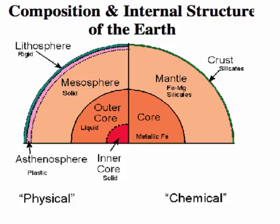So I want to look at the two different types of layers. The physical layers on this half of the pie chart — that was video two — and these chemical layers, where we have the core, metallic iron; we have the mantle, iron, magnesium, silicates; and we have the thin crust, basically silicates.